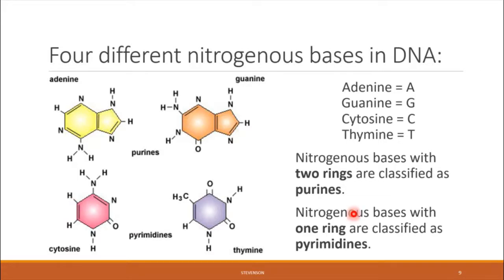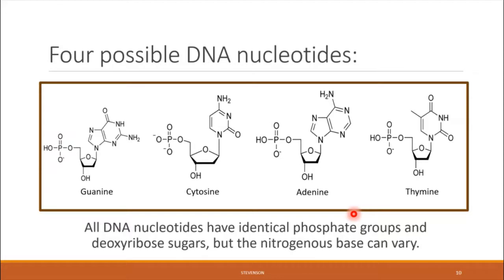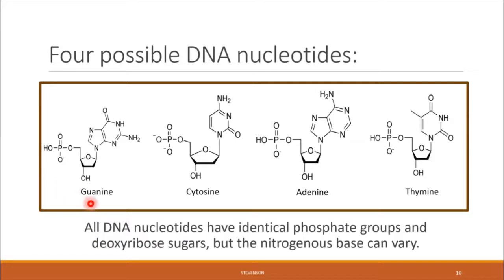The other components of the DNA nucleotide are the phosphate group and the sugar. While the nitrogenous base can vary between A, T, G, and C, the phosphate group and the sugar are always the same. The sugar found in DNA is always deoxyribose, which is the namesake of the molecule. So each of the four DNA nucleotides has an identical phosphate group and an identical sugar — the only thing that changes between them is their nitrogenous base.